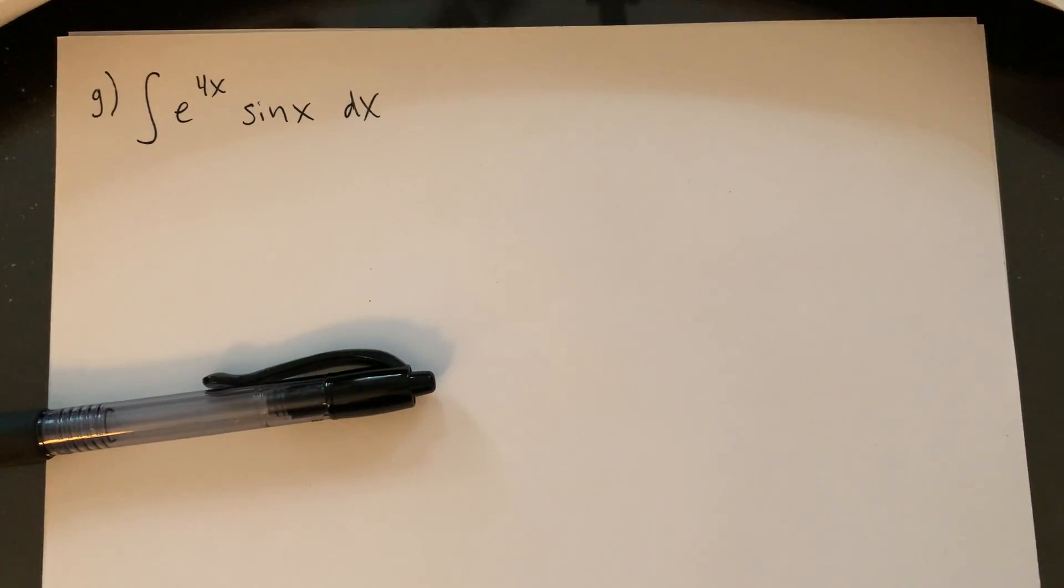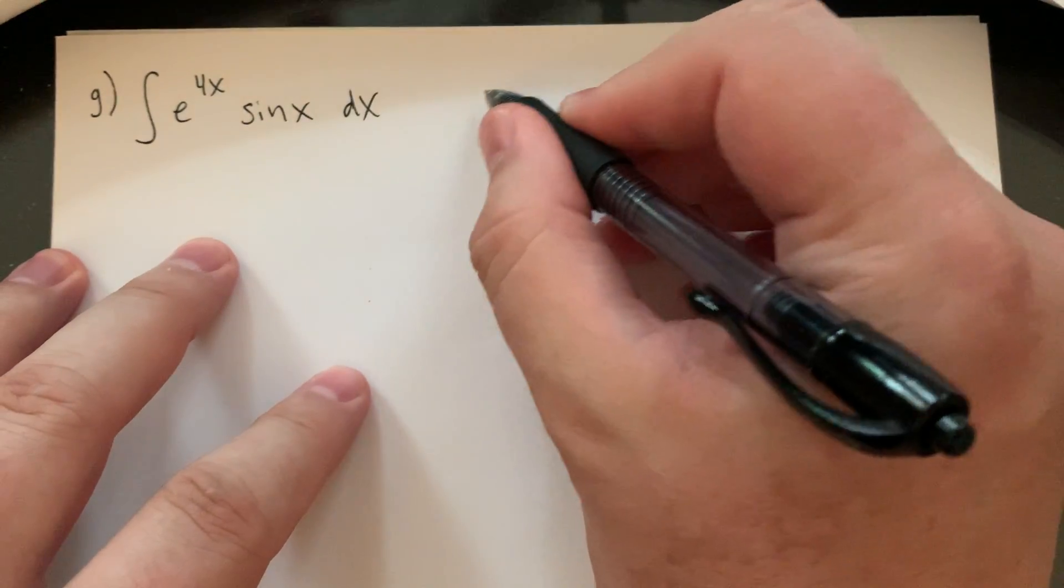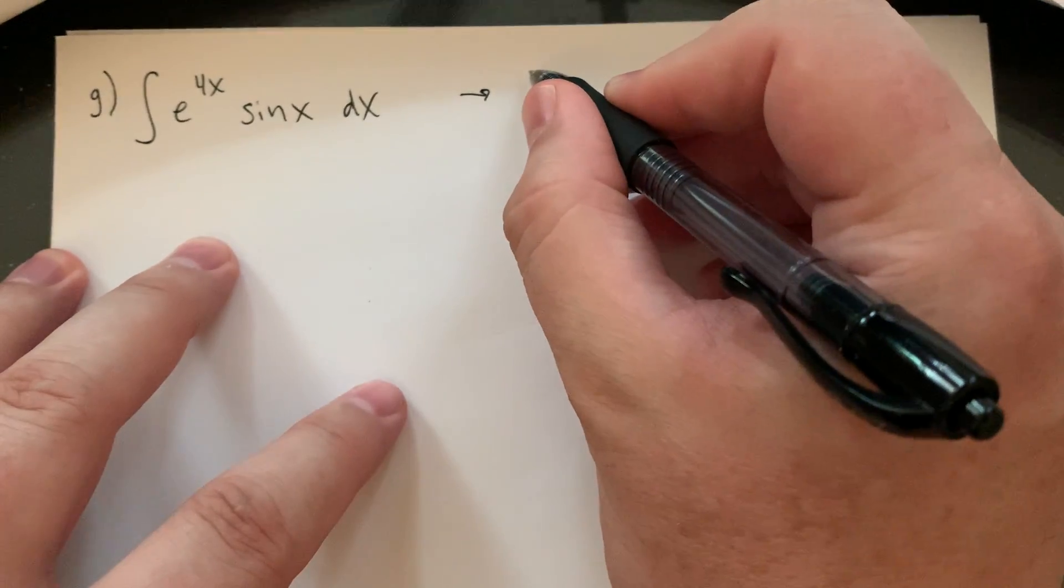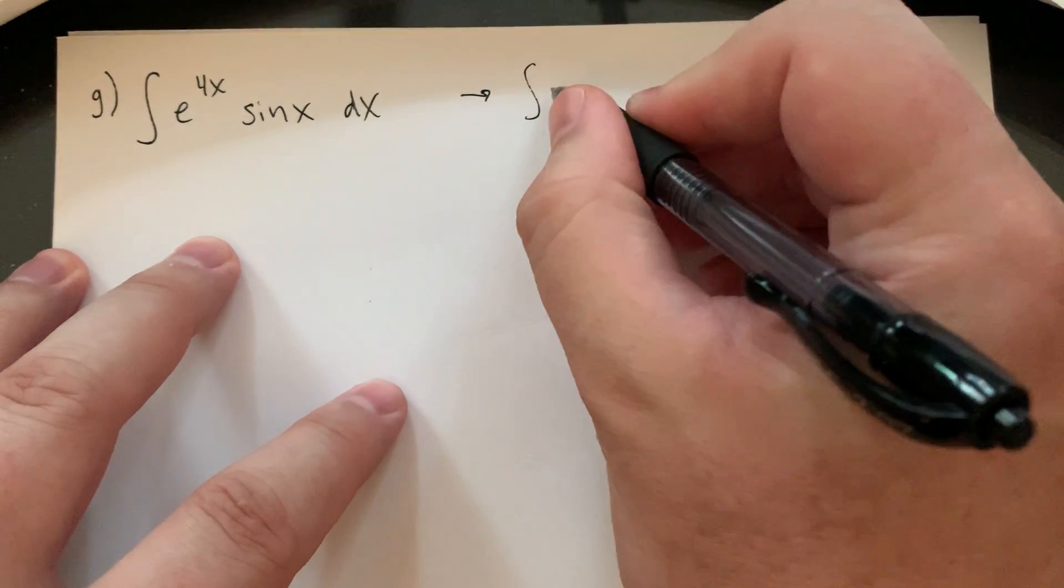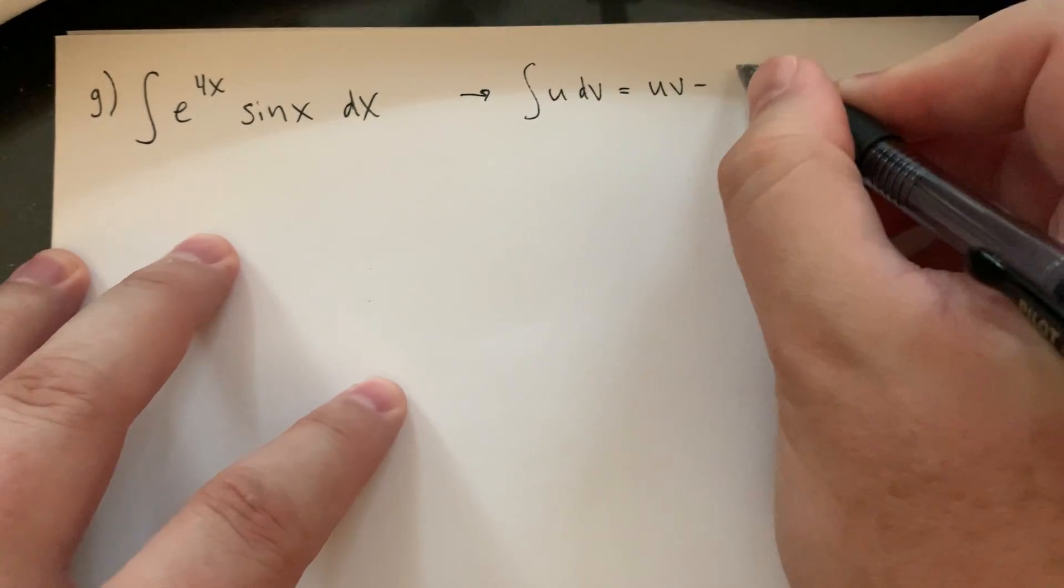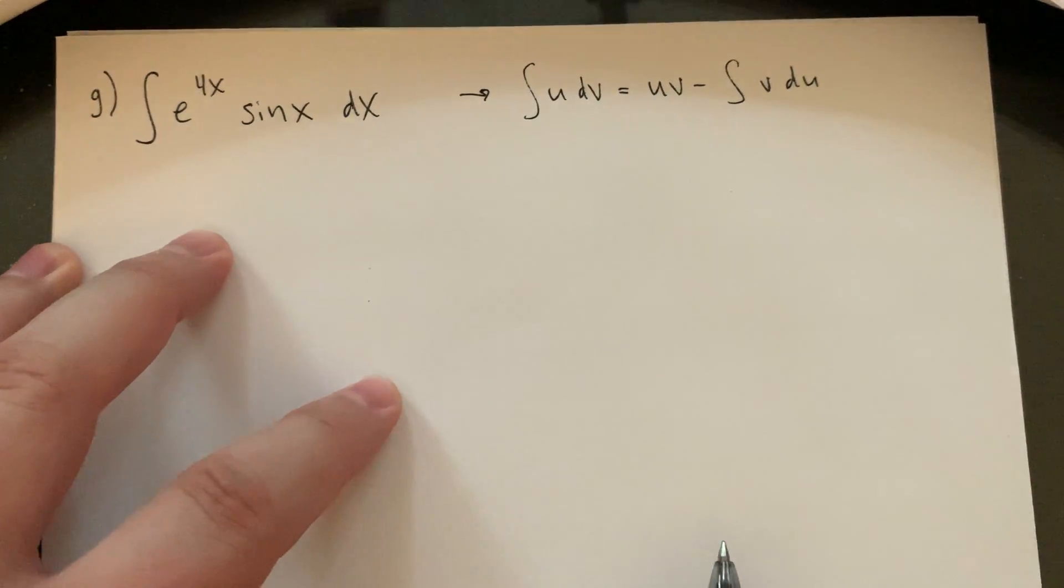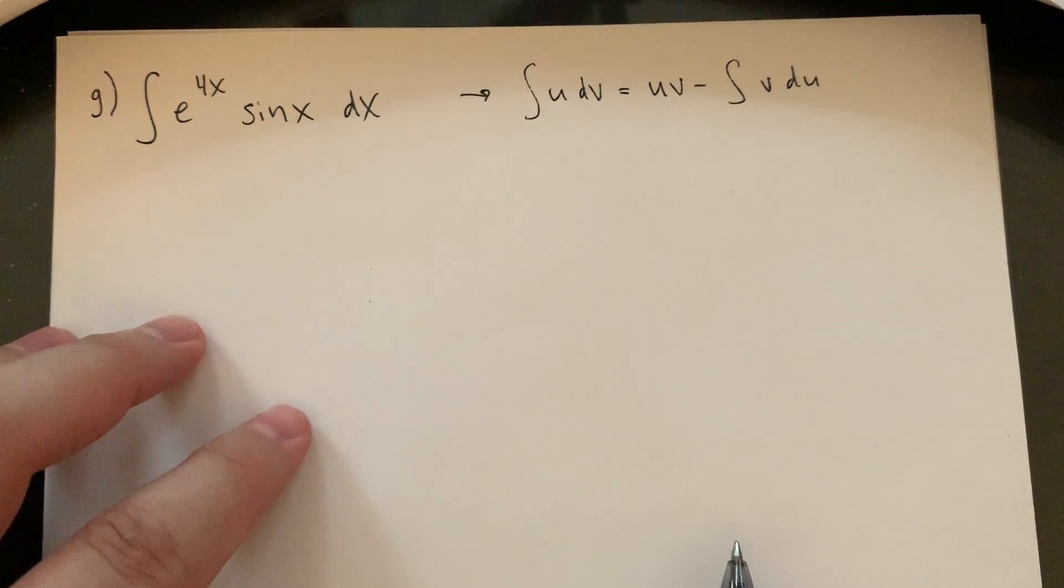All right, last one from the practice quiz. This is, of course, more integration by parts. I'm sure you guys have this memorized by now, but just as a reference, I'll put our formula back up. The integral of u dv is going to be u times v minus the integral of v du.